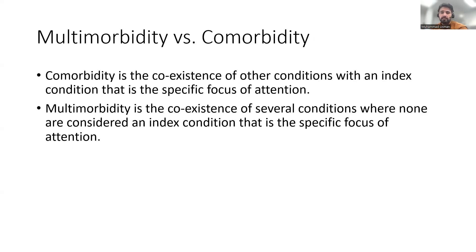Looking at multimorbidity versus comorbidity: multimorbidity is a highly heterogeneous concept and can be used to describe a wide array of patients experiencing a multitude of different combinations of conditions. Whereas comorbidity refers to the co-existence of other conditions within an index condition that is the specified focus of attention.